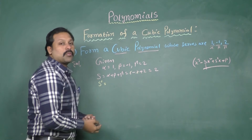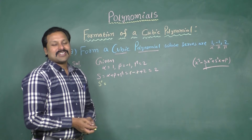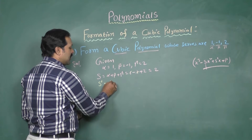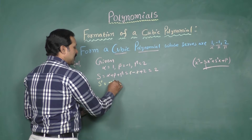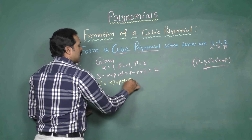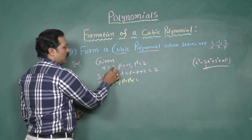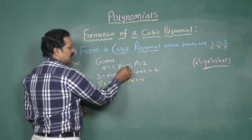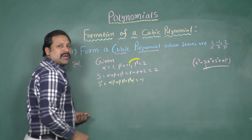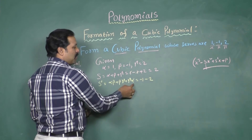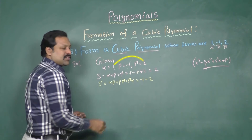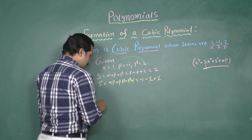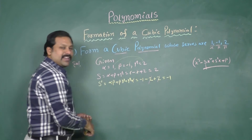S-dash means the sum of products of zeros taken two at a time: alpha-beta plus beta-gamma plus gamma-alpha. Alpha-beta is 1 into minus 1, giving minus 1. Beta-gamma is minus 1 into 2, giving minus 2. Gamma-alpha is 2 into 1, giving plus 2. So minus 2 plus 2 cancel out, and the final result is minus 1.